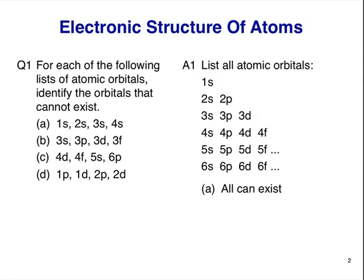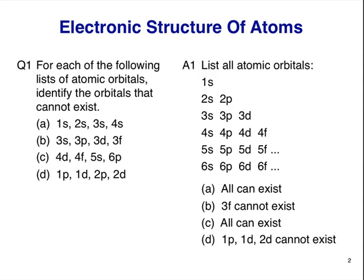For A, all orbitals can be found in the list, so all are true atomic orbitals. For B, we can see that the 3f orbital doesn't exist. For C, all orbitals in the list can exist. But for D, we see that only the 2p appears in the list we wrote. All others cannot exist.